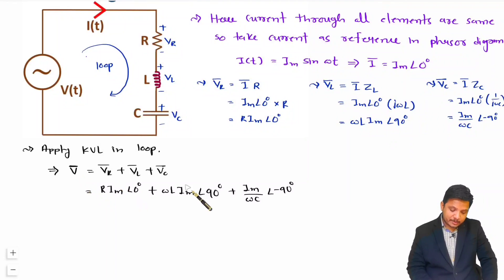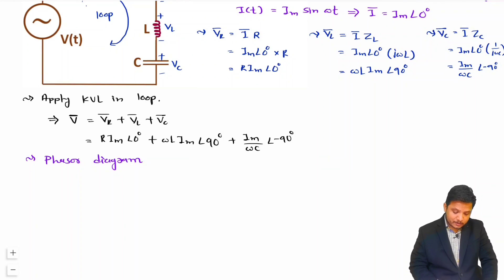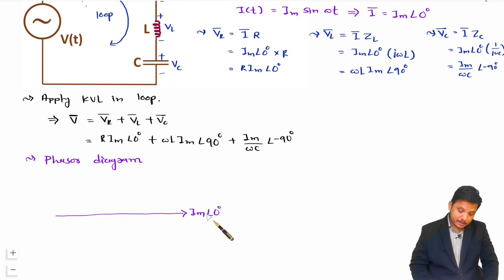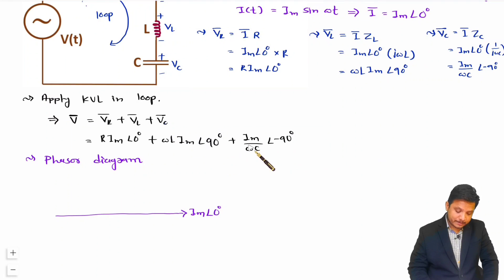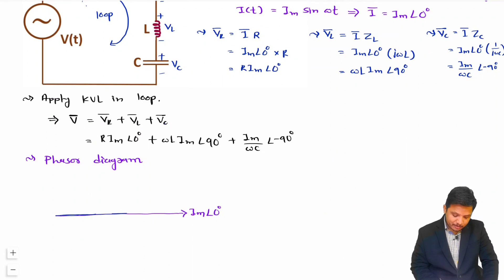Now let us draw the phasor diagram. The current is the reference phasor with magnitude Im and angle 0°. I am plotting the current first — it has magnitude Im and angle 0°. This is the current phasor. The total voltage phasor is the algebraic sum of three components: VR, VL, and VC.